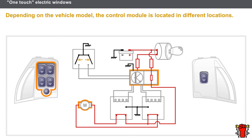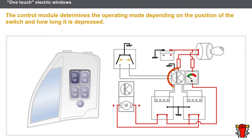The one-touch electric window system uses a control module. The control module determines the movement and direction of the window motors. Depending on the vehicle model, the control module is located differently. It determines the operating mode depending on the position of the switch and how long it is depressed.